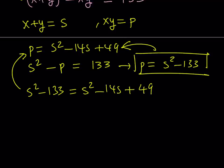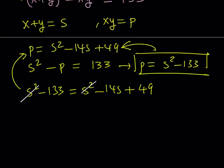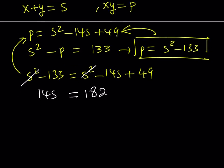Obviously, here, s squared cancels out, and we end up with a really nice equation. Add 14s, add 133 to both sides. You get 182, and if you divide both sides by 14, you'll notice that s equals 13.